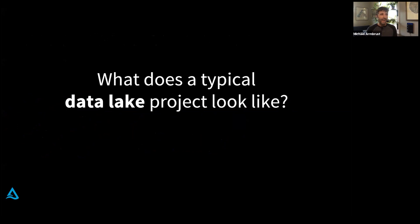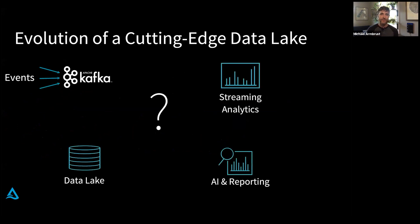Why is this? What does it actually look like when you build a data lake project, and what are some of the challenges you run into? I'm going to start with a fairly simple setup. My boss came to me with a stream of events in Kafka. He wants me to do two different things: streaming analytics so we can understand what's happening in real time, and AI and reporting, where I take a more longitudinal historical view.